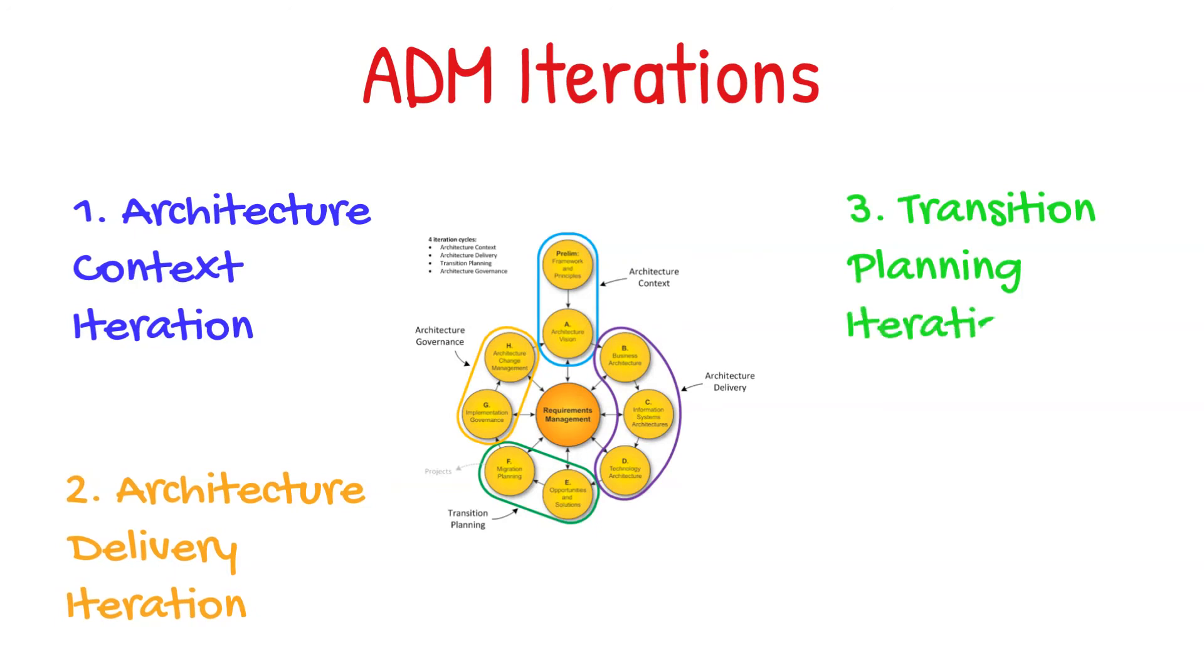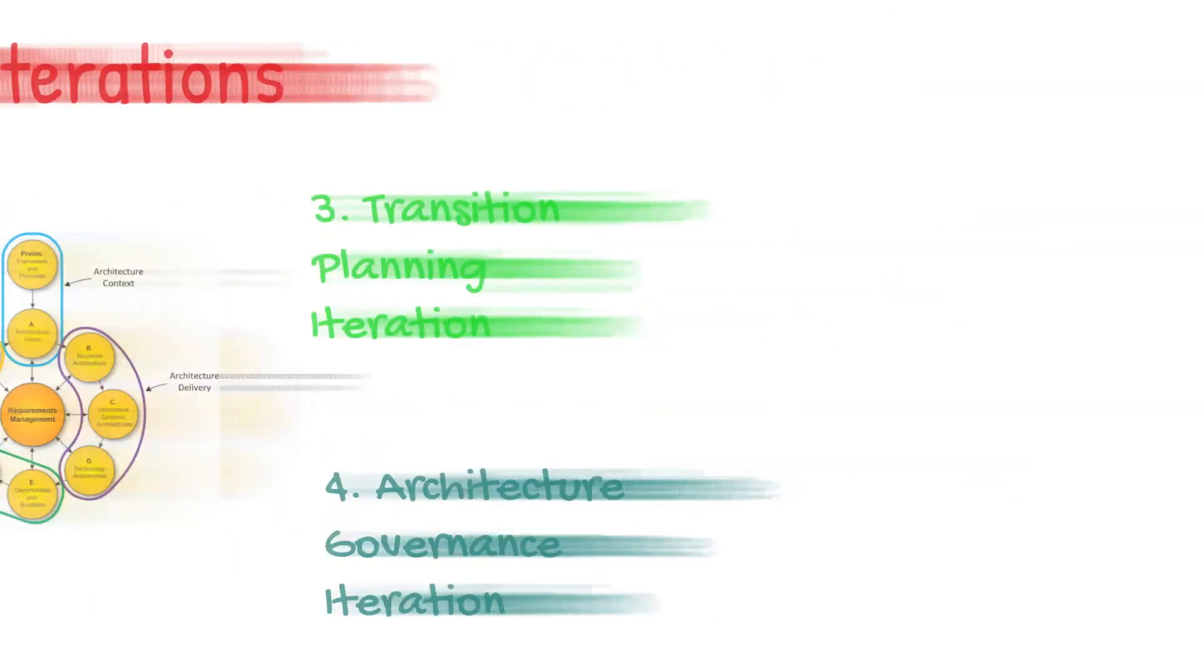And the fourth is the Architecture Governance Iteration, which provides guidance on how we align with our company's policies and standards.